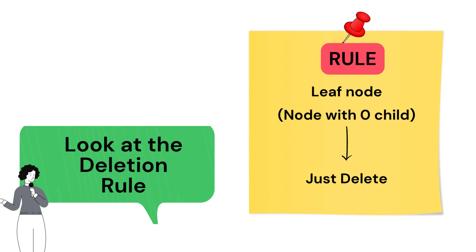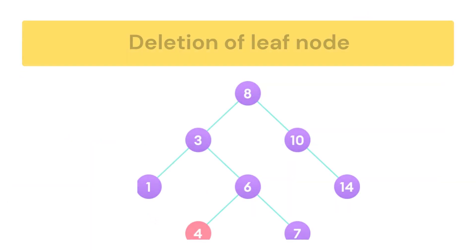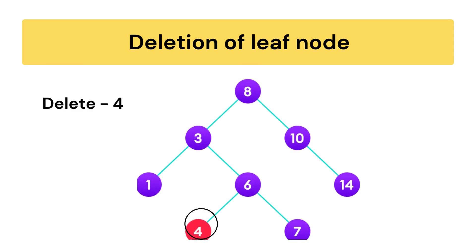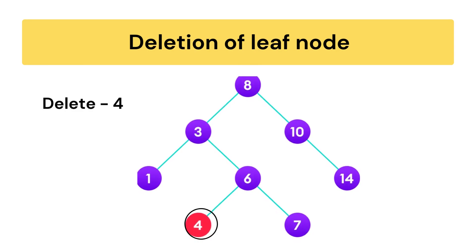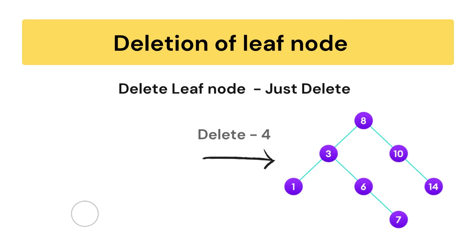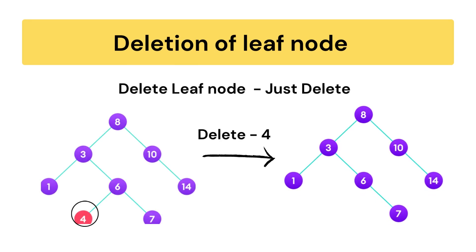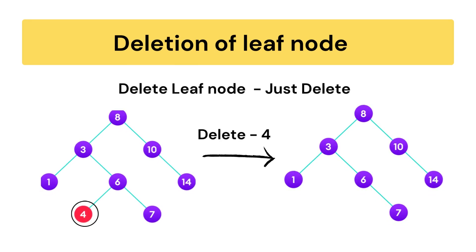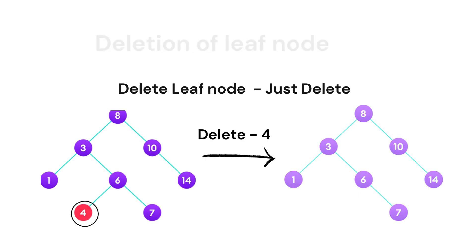Rule one: if the node to be deleted is a leaf node, we simply delete it. For example, consider we have to delete node 4. Node 4 is a leaf node in the BST and it doesn't have any child node, so we just delete node 4. After deletion, our BST will simply look like this.